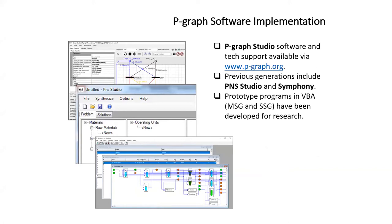P-graph software has evolved over multiple generations. The most accessible one is hosted by the University of Pannonia in Hungary and is accessible via p-graph.org and is open access.